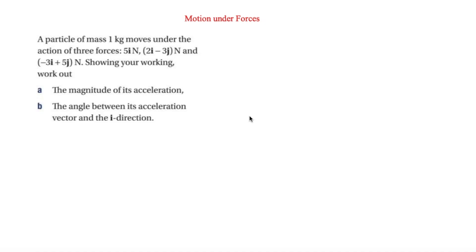This is I'm Stark and in this video we are looking at motion under forces. The first question is that a particle of mass 1kg moves under the action of three forces: 5i, 2i minus 3j, and minus 3i plus 5j. Showing your working, you have to first work out the magnitude of its acceleration, using F equals MA.